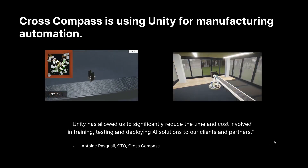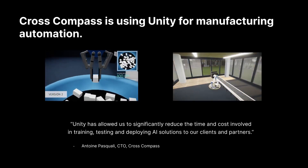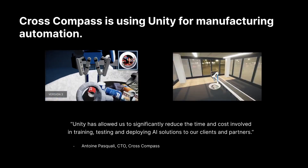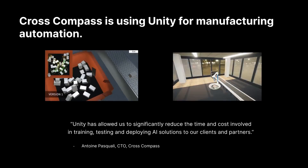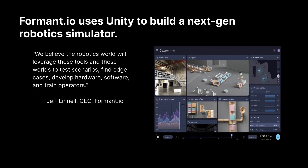Here we have two examples by a company called CrossCompass, and they are using Unity to train a pick-and-place model. It is first doing object detection and then pose estimation on objects in a bin, and placing them on a conveyor belt. And if you look at the video on the right, you'll see that same model being run with domain randomization — this is to make the trained model more robust. Another example is Formant.io, who used Unity to build a fleet simulator. This fleet simulator models a warehouse and allows you to track in real time the location of your fleet — individual robots operating in that warehouse.